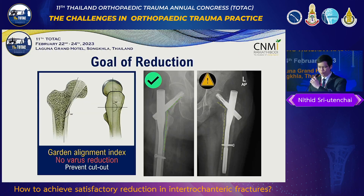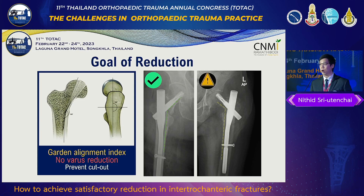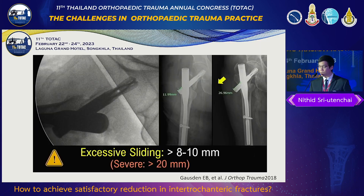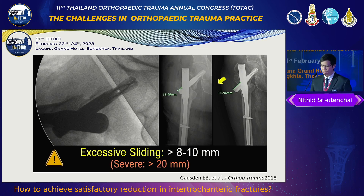We start with the goal of the reduction. The first goal is to restore the proximal femoral alignment without varus reduction, as that is a factor of fixation failure. The second goal is to prevent excessive sliding, which is a factor related to ilio-tibial band irritation and gait disturbance in severe excessive sliding.